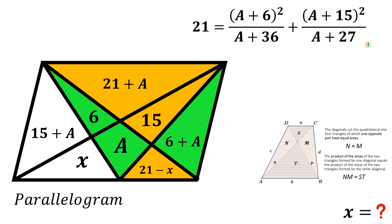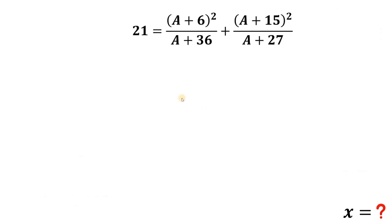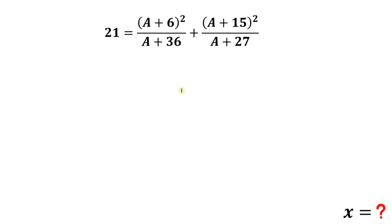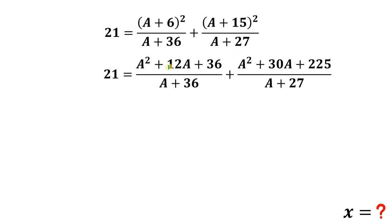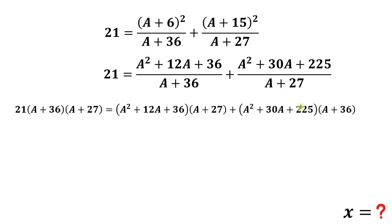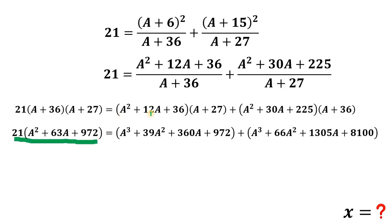With no x remaining, we can solve for a. First, expand: (a + 6) squared equals a squared plus 12a plus 36, and (a + 15) squared equals a squared plus 30a plus 225. Then multiply both sides by the product (a + 36)(a + 27) to eliminate the denominators, and expand: 21 times (a + 36)(a + 27) equals the resulting polynomial expressions.